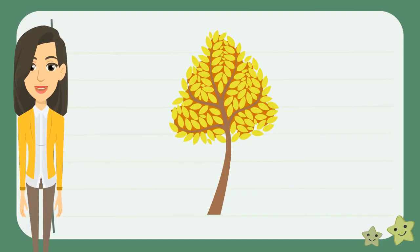A deciduous tree loses their leaves during the year. In the fall, the leaves change color and then they fall off. This way, the deciduous tree can save energy and survive the winter.